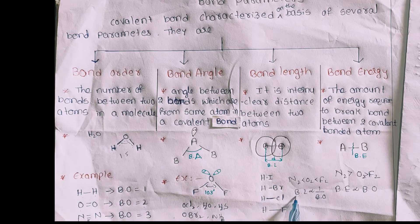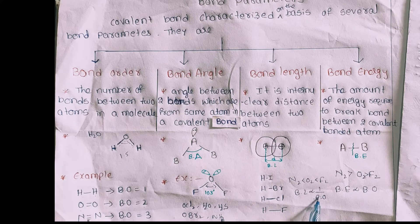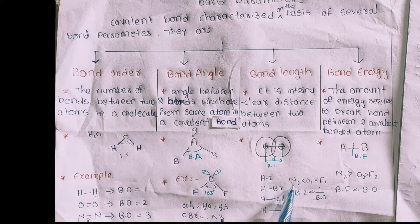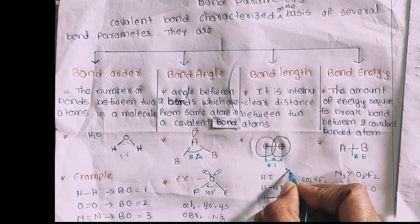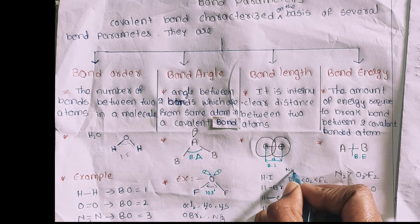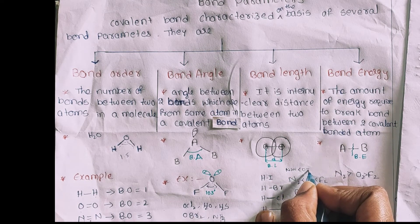If bond order increases, the bond length decreases — and vice versa. If bond order increases, bond length decreases; if bond order decreases, bond length increases. For example, in the N2 molecule, the bond order is 3 and the bond length is small. For O2, the bond order is 2, so the bond length is larger than that of N2.